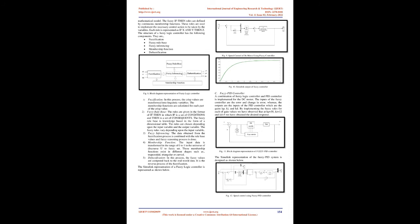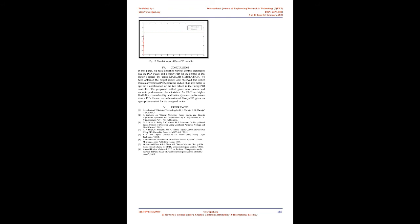2. Fuzzy rule base: The rules are given in the format of if-then in which if is a set of conditions and then is a set of consequence. The fuzzy rule base is knowledge based in the form of a dimensional table. The rules are chosen depending upon the input variable and the output variable. The fuzzy rules vary depending upon the input variable.